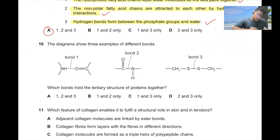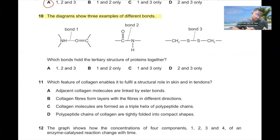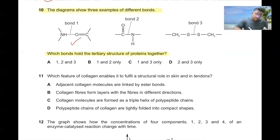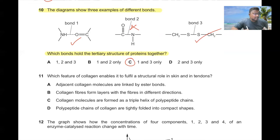Question number ten. The diagram shows three examples of different bonds. Which bonds hold the tertiary structure of protein together? The tertiary structure is held together by bonds between the R groups. So 1 and 3 are correct, making option C the correct answer.